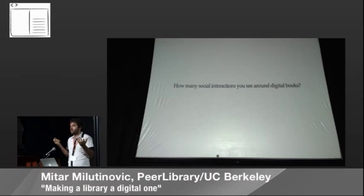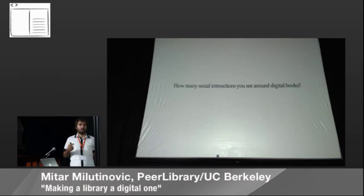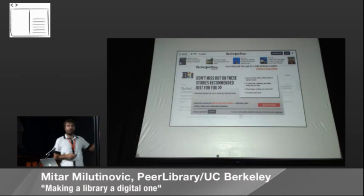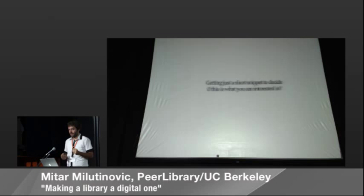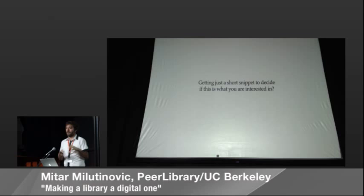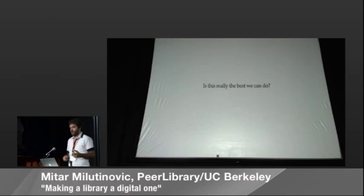So how many social interactions do you know or use around digital books? You can buy them, read them on your computer, maybe sometimes comment — and that's it. That's one social interaction you're familiar with. You want to buy them, you get paywalls. You are even prevented from social interactions with things you want to do. You have to decide based on some short snippet whether you want to buy something. In the real world, you can ask friends, be offered the book, listen to the whole thing. Is this really the best we can do?